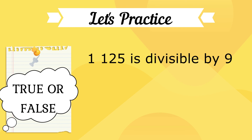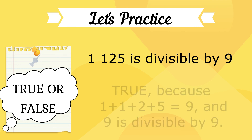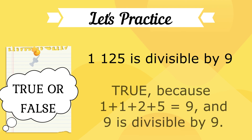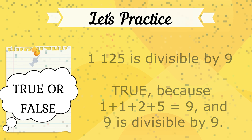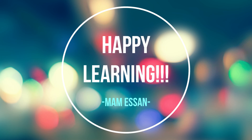True or false? 1,125 is divisible by 9. True, because 1 plus 1 plus 2 plus 5 equals 9, and 9 is divisible by 9. Happy learning!